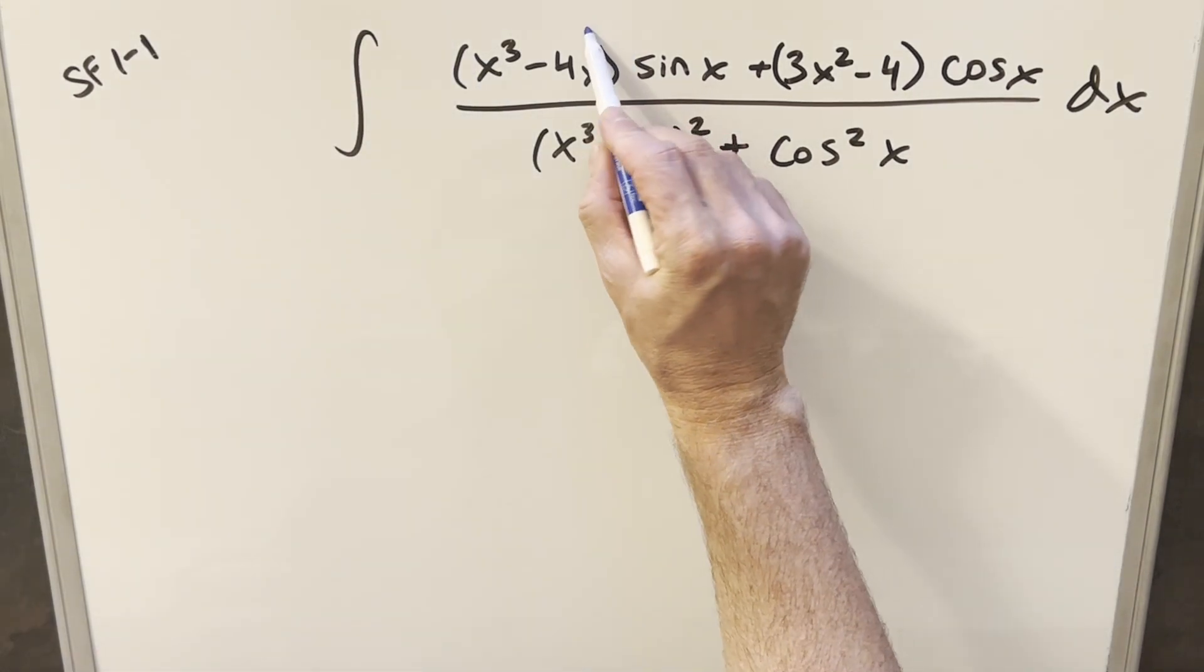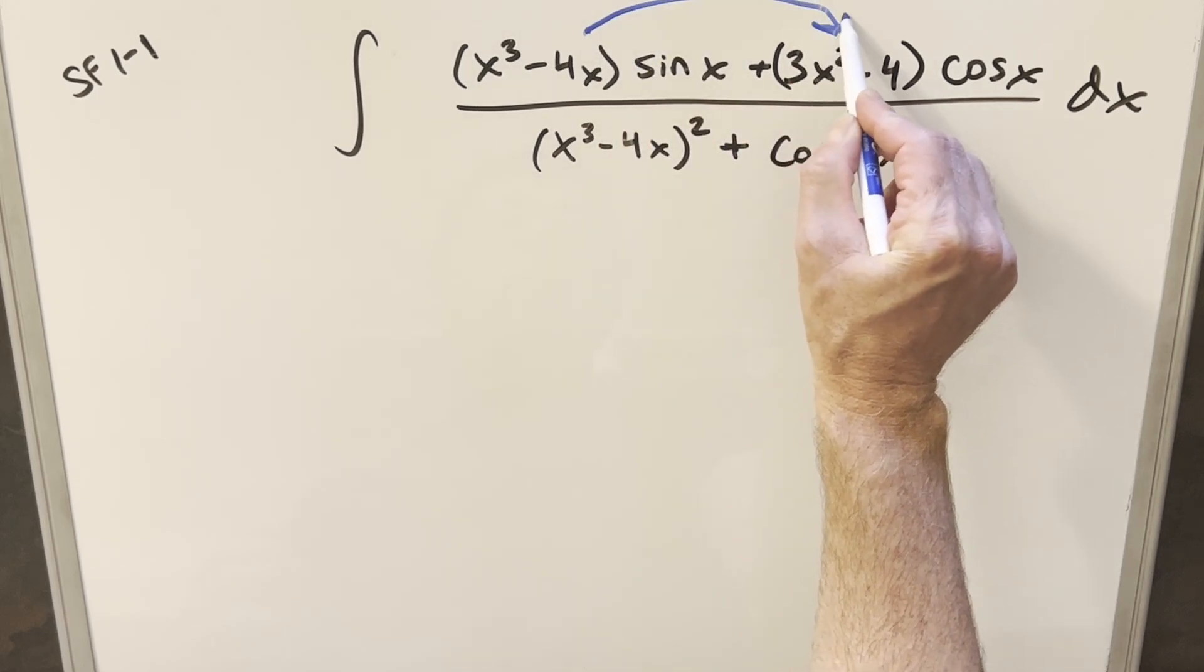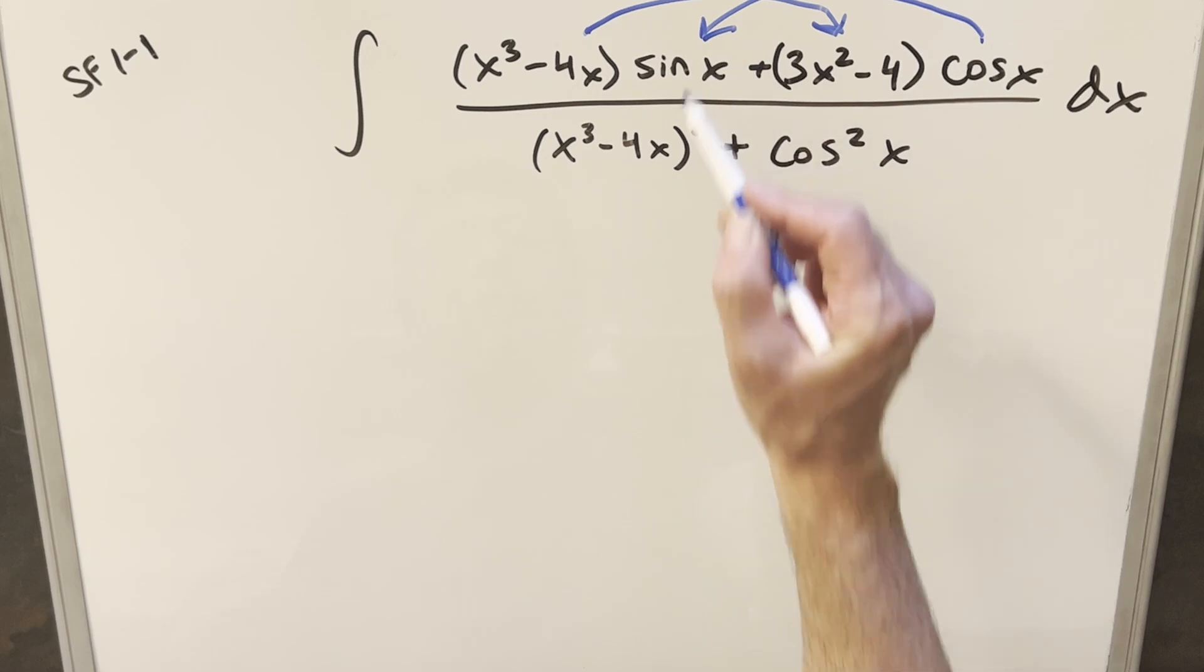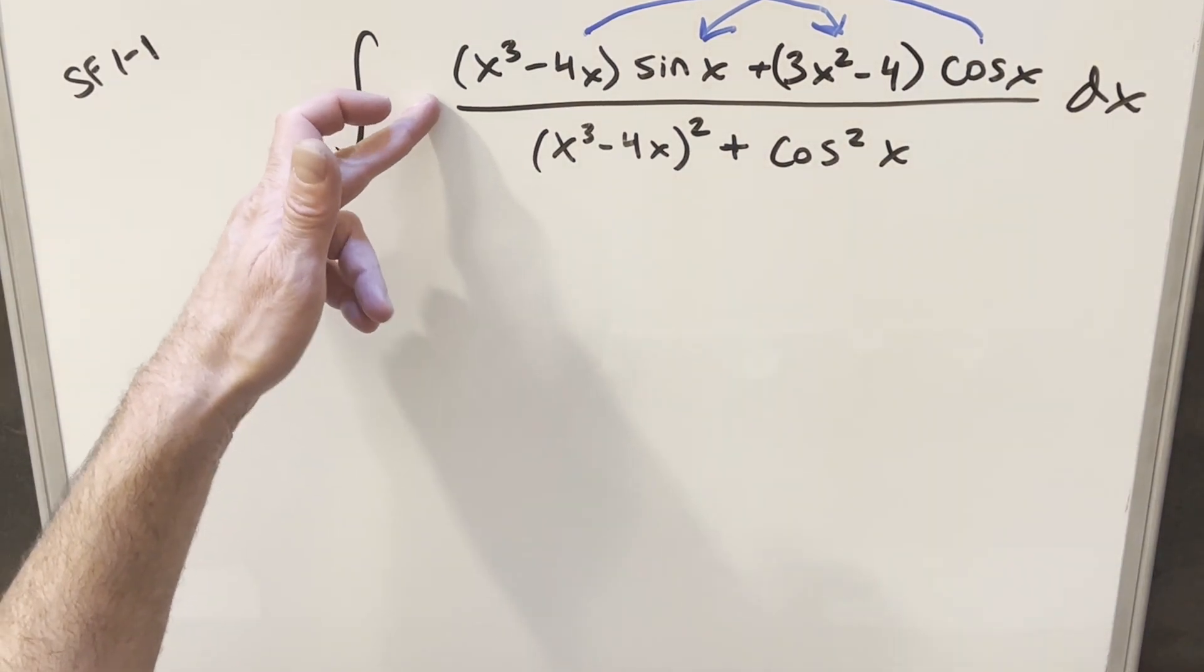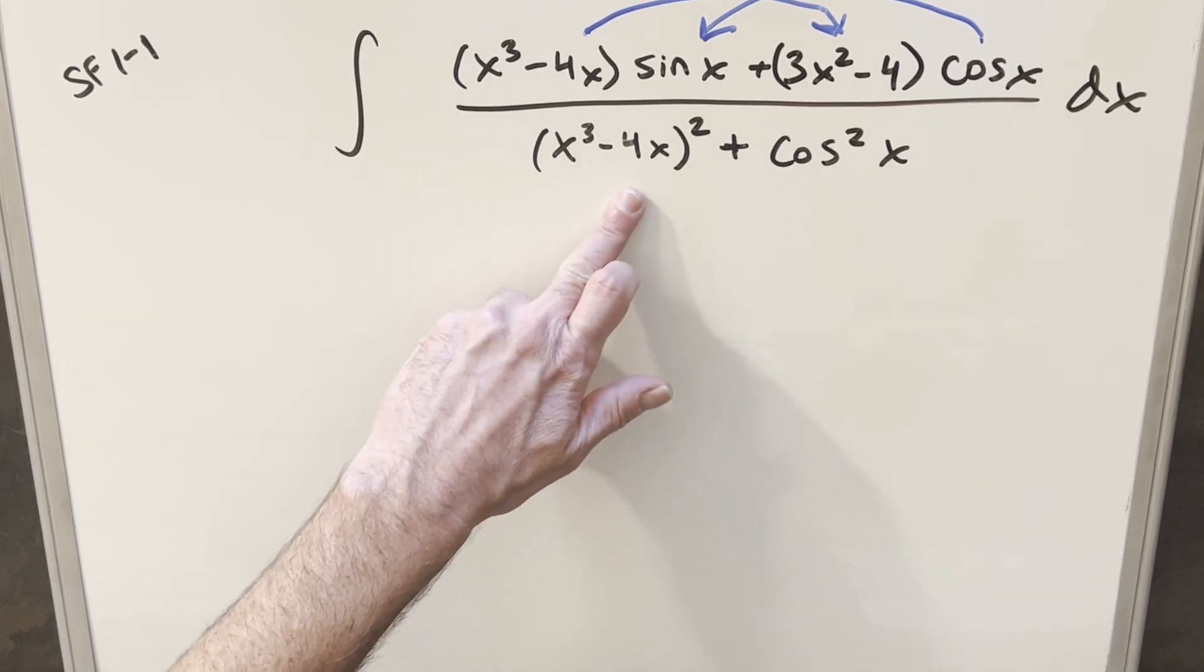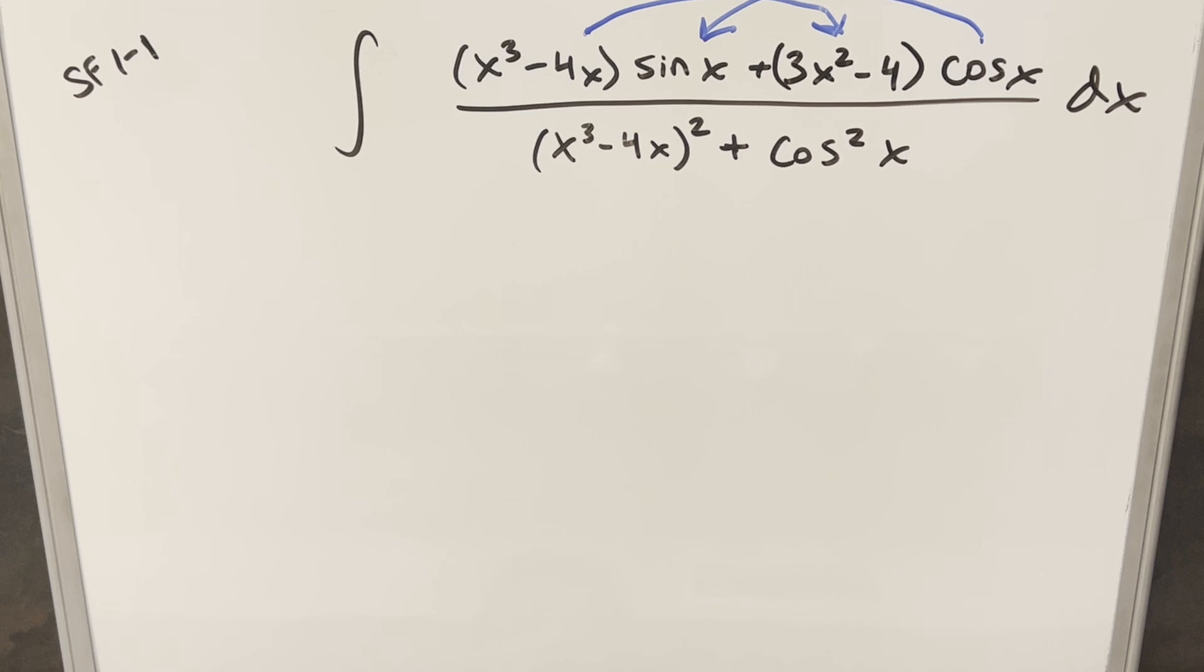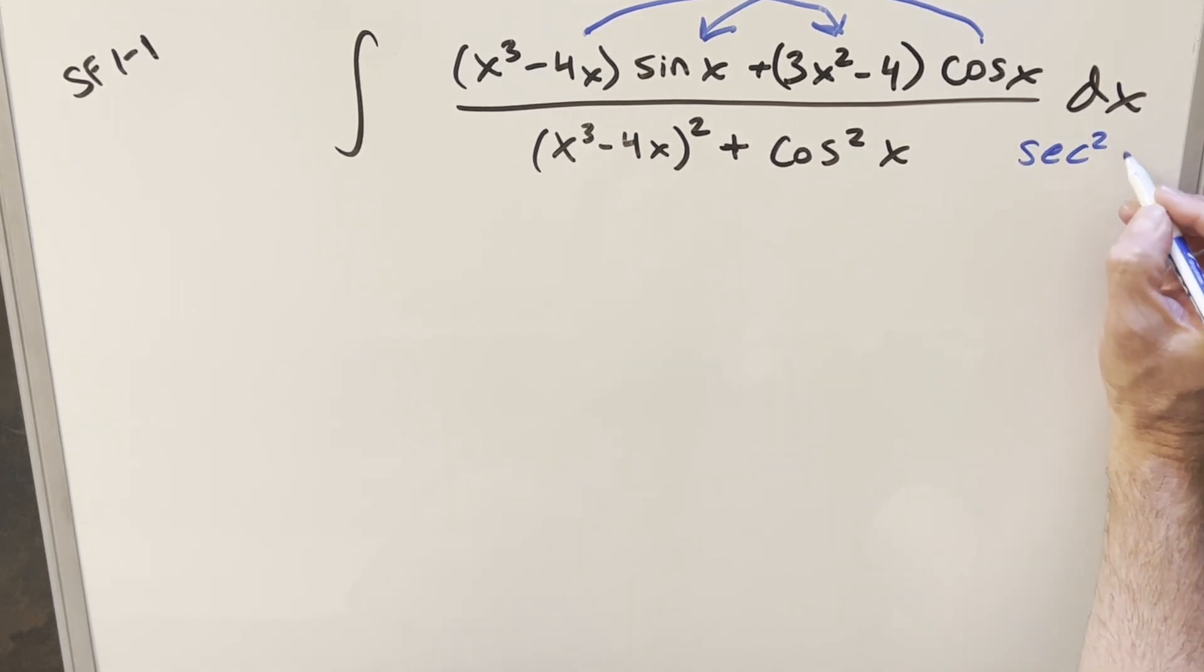So what I noticed first with this is in the numerator, if you take the derivative of x cubed minus 4x, you have the derivative right here. You take the derivative of cosine, you almost have sine, it's minus sine. So I was thinking maybe reverse product rule would work on that, but that didn't really work because of what we have in the denominator. So I had to give up on that idea and I went to the common trick instead of just multiplying by secant squared x over secant squared x.